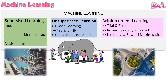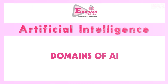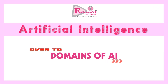So machine learning can be supervised learning, unsupervised learning — that is deep learning — and reinforcement learning. In the next session, we will look into various domains of artificial intelligence. Thank you.